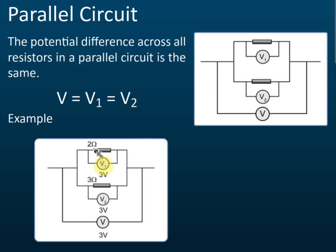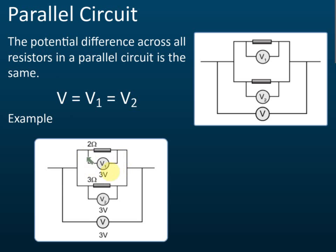For example, with a 2 ohm and a 3 ohm resistor in parallel, if the potential difference here is 3 volts, then the potential difference across the other branch must also be 3 volts — no matter what the resistance is, whether 2 ohm, 200 ohm, or 2000 ohm. The potential difference across the two resistors together is also 3 volts.